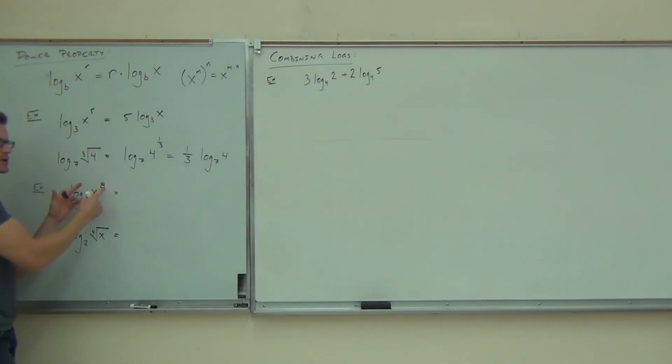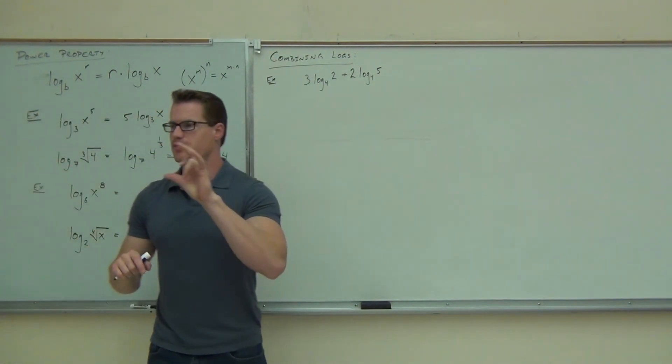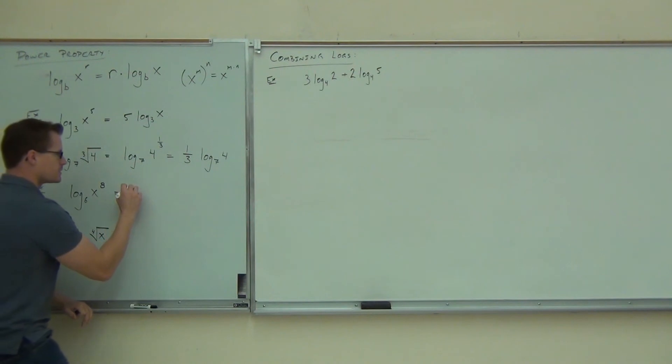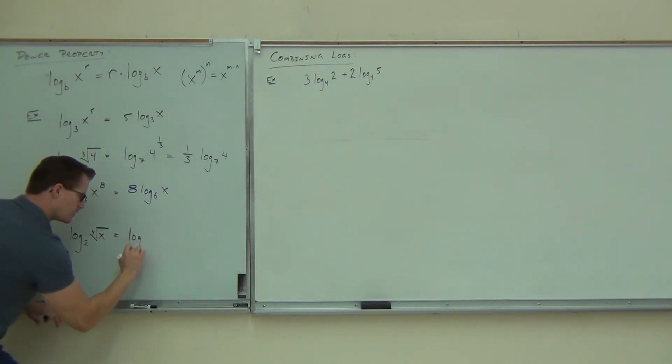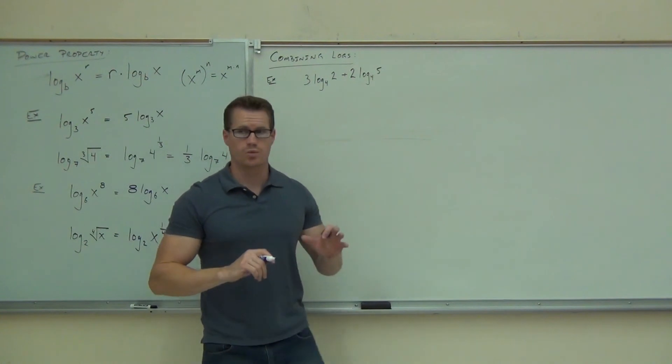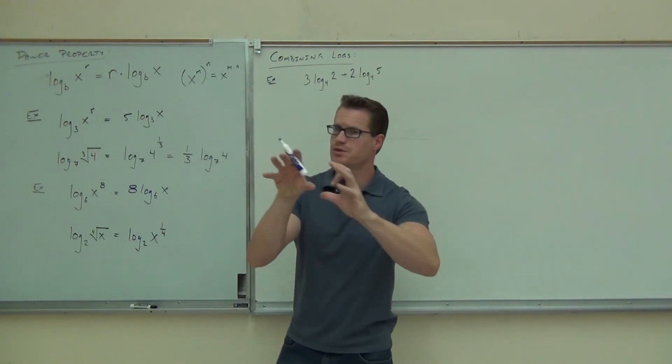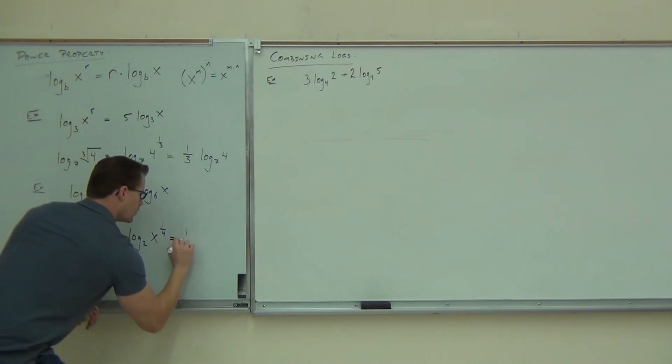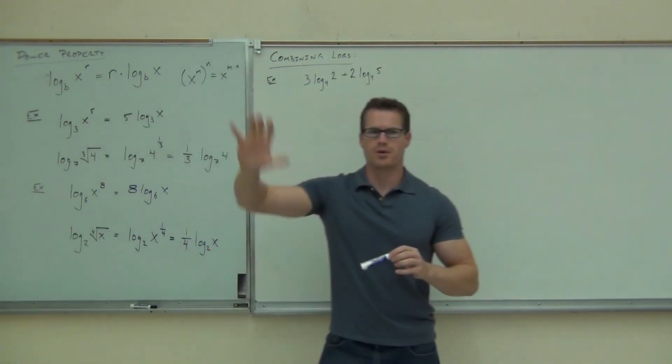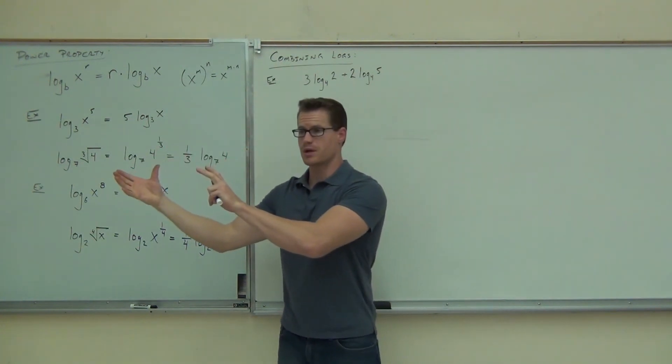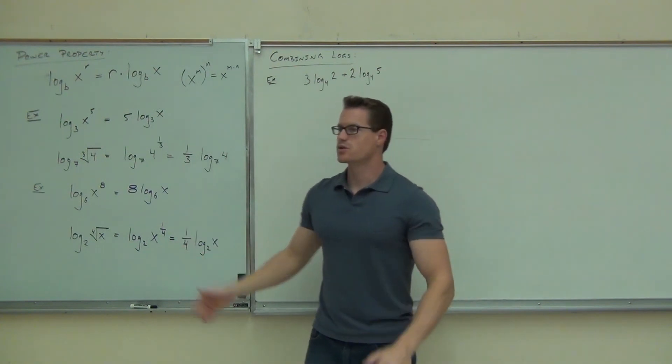Since we have an exponent here, we know that our power property says any exponent can be moved to the front of our logarithm and be multiplied, so we'll have 8 log base 6 of x. Here, we do need to change that to an exponent before we do any more work. So we do need to know absolutely that this is really log base 2 of x to the 1 fourth power. Did you translate that appropriately as well to the 1 fourth power? Yes. Then since we have the exponent, we can move it to the front of our logarithm. You'll get 1 fourth log base 2 of x. Could you write this whole thing as over 4? Yeah, that would be appropriate as well. Raise your hand if you got both those correct. Do you feel okay on the power property, the product property, and the quotient property? That's it. That's the only three we have.